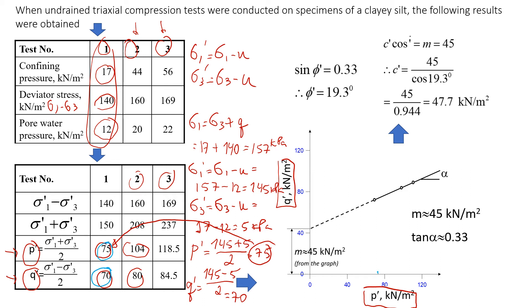75 is somewhere here and 70 is here. So we have the first point here. That's from test 1. From test 2 we have 104 here and 80. This is point 2, and this is point 3.